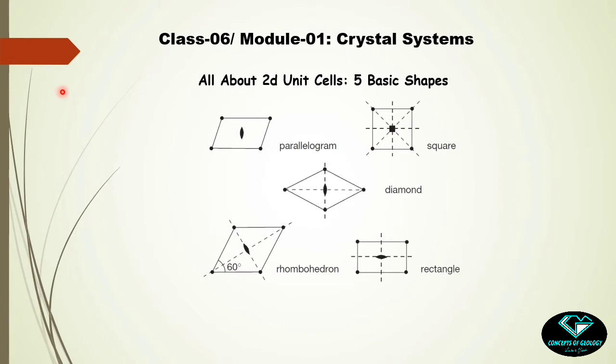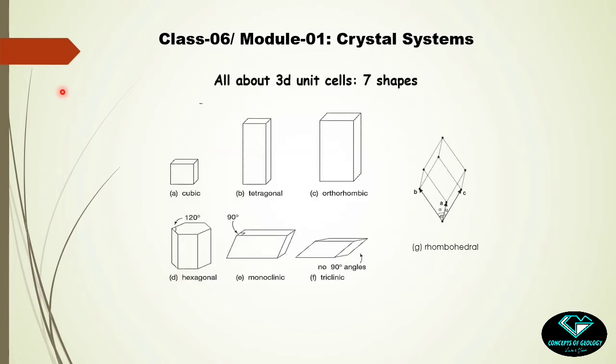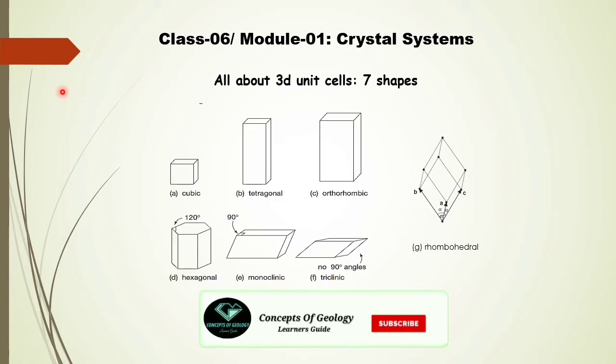After that, we added one more translation vector in these two-dimensional unit cells and created these three-dimensional unit cell shapes. We got six basic three-dimensional unit cell shapes, namely triclinic, monoclinic, orthorhombic, hexagonal, trigonal, and cubic.